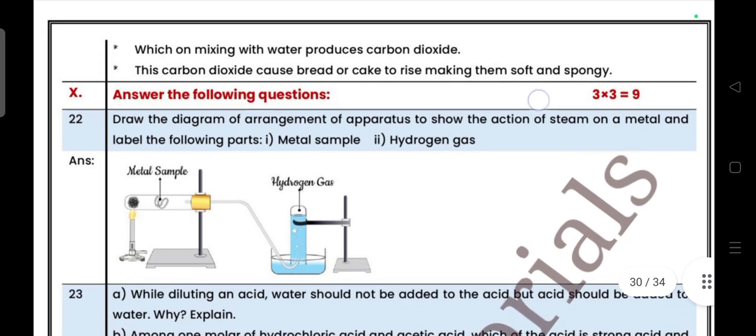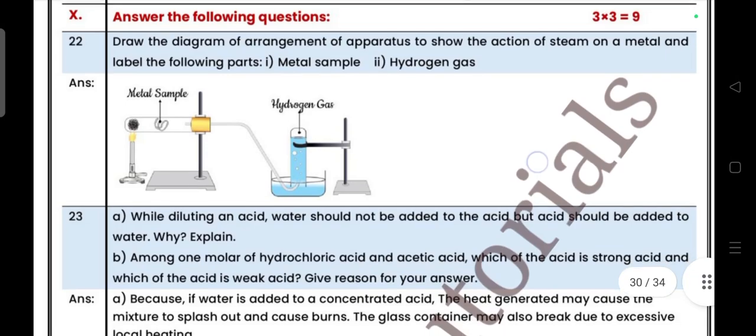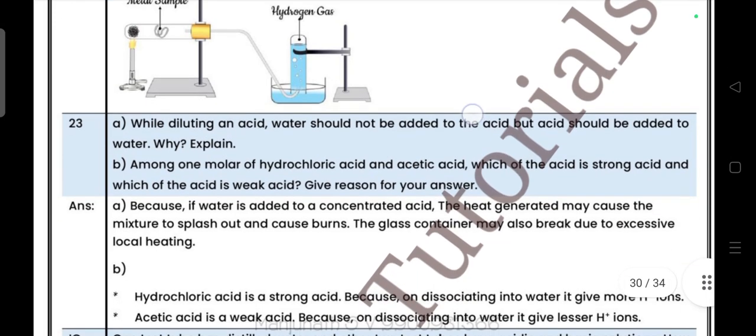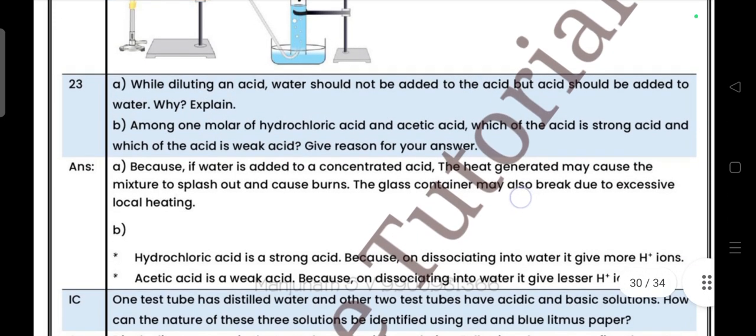Next, three mark questions. Draw a diagram of an arrangement of apparatus to show the action of steam on a metal and label the following parts: metal sample and hydrogen gas. Next: While diluting an acid, water should not be added to acid but acid should be added to water. Explain.